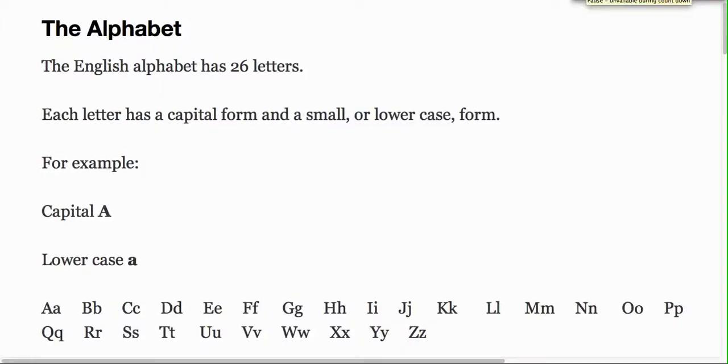The alphabet. You can see alphabet has no S. We have only one alphabet. The English alphabet has 26 letters.